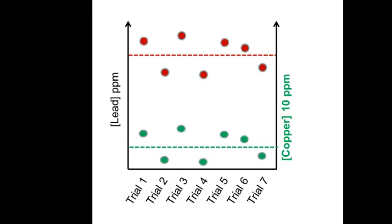And likewise, let's say in trial two, the nebulizer wasn't making too big of droplets. So guess what? The copper data is low and the lead data is low.